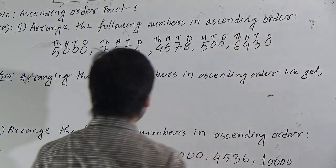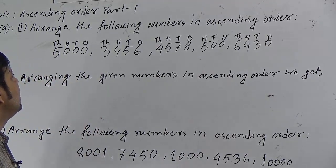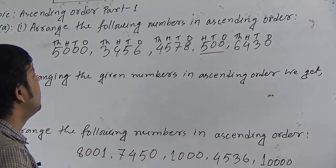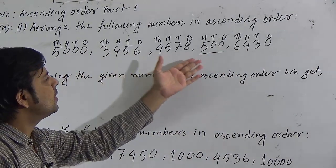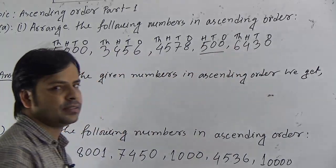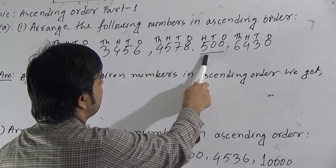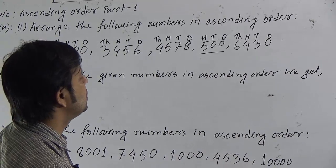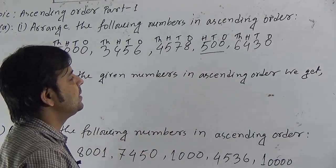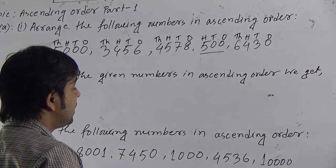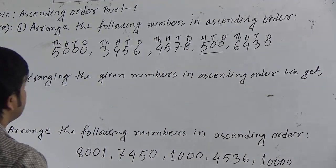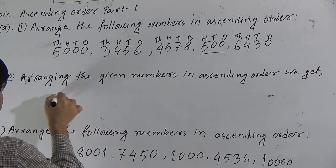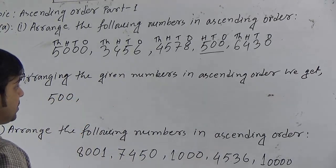Dear students, if you observe these numbers, except five hundred, the other four numbers contain a thousands position. But this number — five hundred — contains only hundreds place. There is no thousands position. So this number is the smallest one. As this number does not contain the thousands position, it is the smallest. So we write five hundred first.